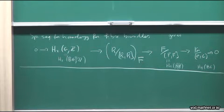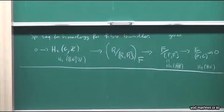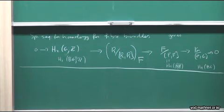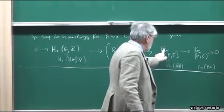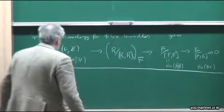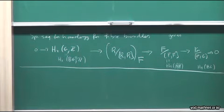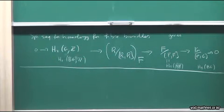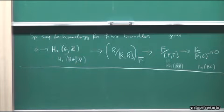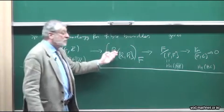In general, it's easy with algebra to calculate the first homology as the abelianization. Now, since R is a normal subgroup, F acts on R by conjugation, and so R modulo — the abelianization of R — becomes an F-module.